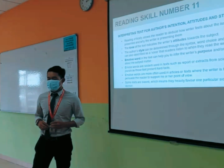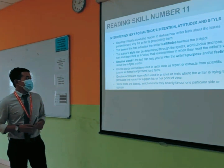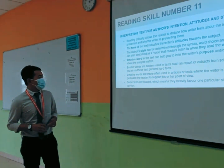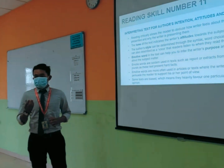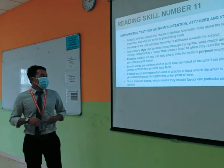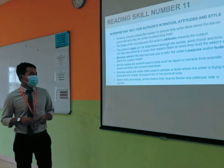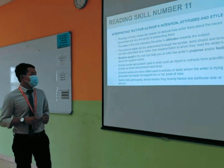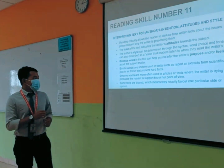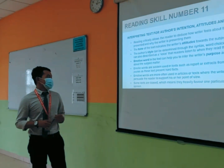Developing reading skills. Reading skills, including interpreting texts for author's intention, details, and style. First, reading critically allows the reader to deduce how the writer feels about the issues presented and why. Take out the tone of the text so you can make a conclusion about the writer's attitude to a subject. The author's style can be recognized through syntax, word choice, and tone — described as a voice. Emotive words help you identify the writer's purpose and feelings about the subject matter.